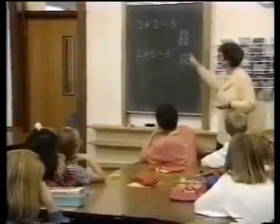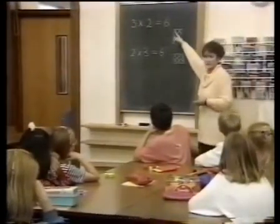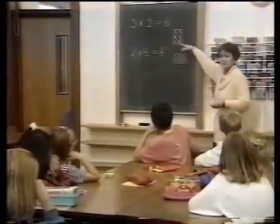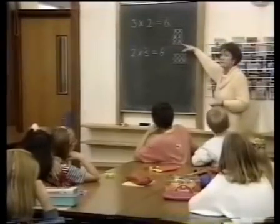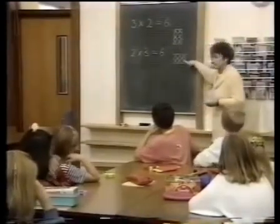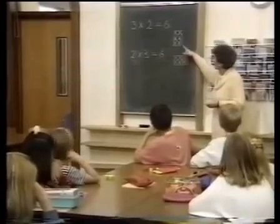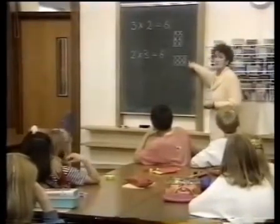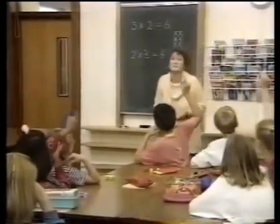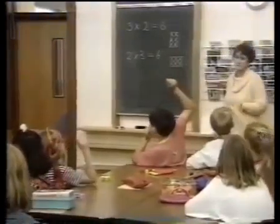We know that we have six crosses. They could have been sweets, apples, whatever in your problem, but we have six of them in both sets. Are these two groups the same? Are they the same? Look at them. Are they the same?